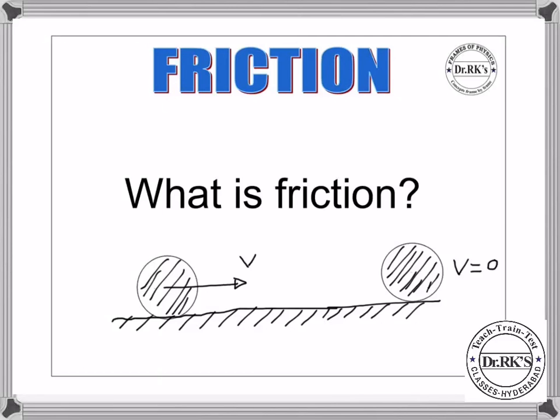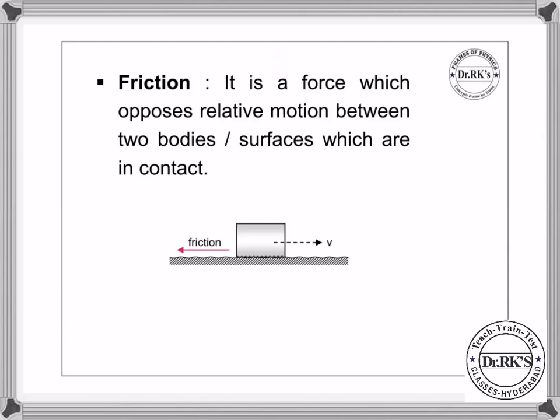What is friction? When you give some velocity to a body and place it on a horizontal rough surface, after traveling a certain distance its velocity becomes zero. Why does the velocity become zero? There must be some force acting on the body which opposes motion. This force is usually called friction.